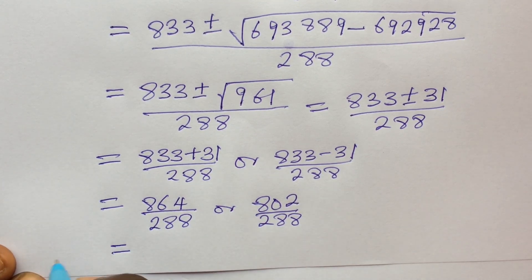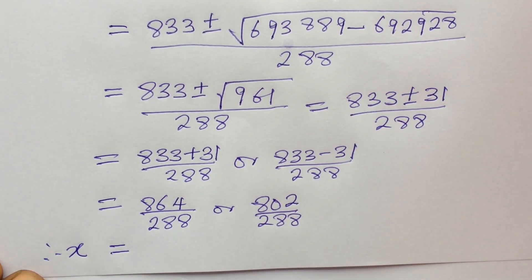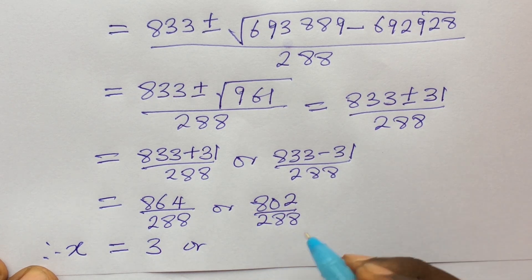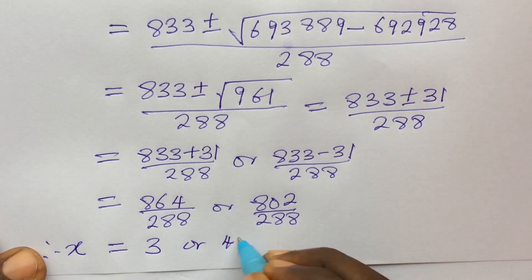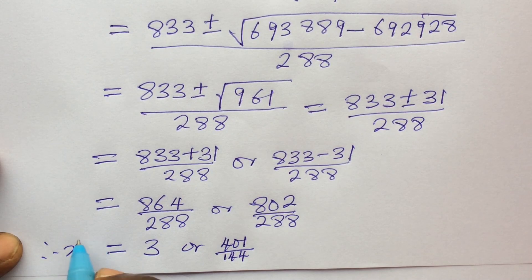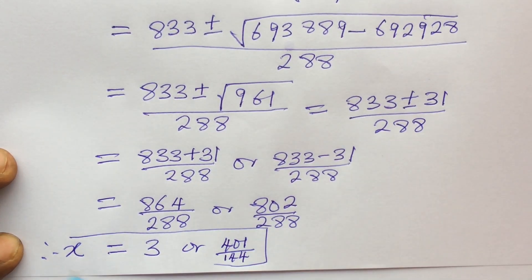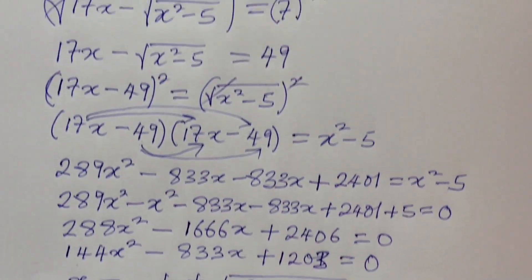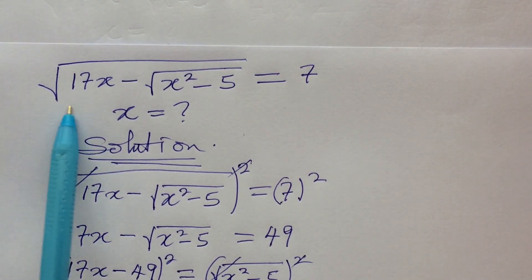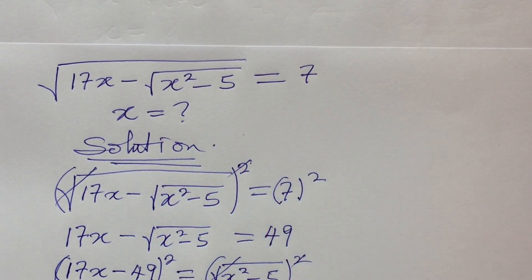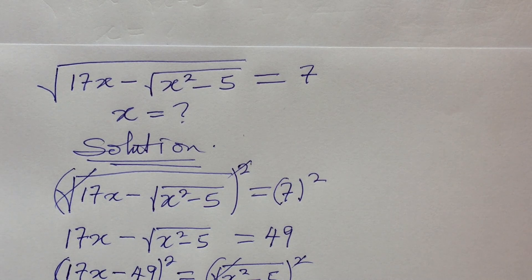Dividing the first: x equals 3. Dividing the second: we get 401 over 144. So these are the two values that satisfy our radical equation — the square root of 17x minus the square root of x squared minus 5, equal to 7. If you have a question regarding the procedure or a better method of solving this challenge, drop it in the comment section.